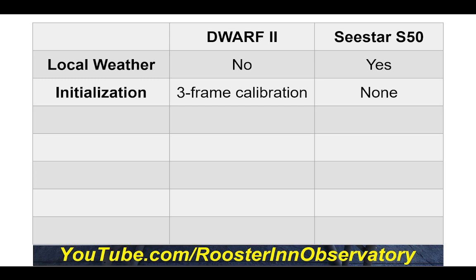Big surprise: the first time I put the Sea Star out, it does not require initialization or calibration. It goes looking for a target, takes a picture when it thinks it's found it, plate solves it, and determines where it is in the sky. The Dwarf 2 has a very effective calibration system — it turns left, right, looks up and down, then takes three frames at a small azimuth variation — and it does an extremely good job.